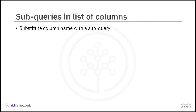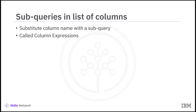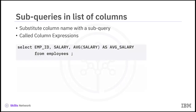The subselect doesn't just have to go in the WHERE clause. It can also go in other parts of the query, such as in the list of columns to be selected. Such subqueries are called column expressions. Now, let's look at a scenario where we might want to use a column expression. Say we wanted to compare the salary of each employee with the average salary. We could try a query like: SELECT employee_ID, salary, AVG(salary) AS average_salary FROM employees.